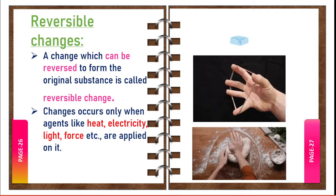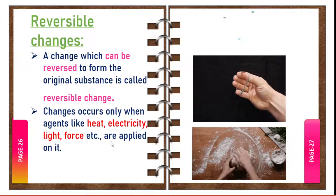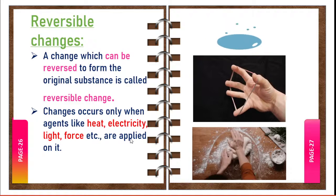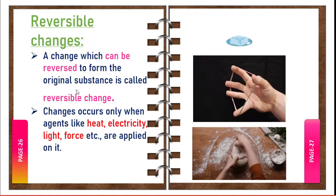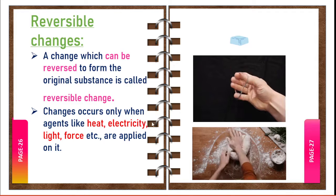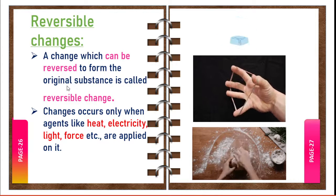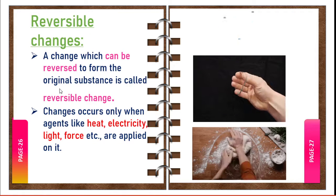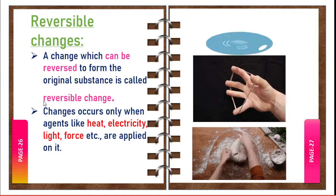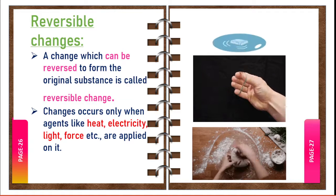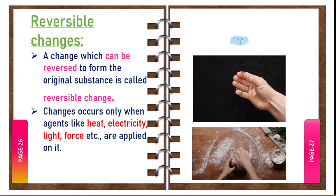A change which can be reversed to form the original substance is called a reversible change. For example, ice is a solid substance. When we heat ice, it melts to form liquid water — a change from solid to liquid takes place. Now if we cool the water by keeping it in the freezer of a refrigerator, it again changes into solid ice. Thus, the melting of ice is a reversible change.